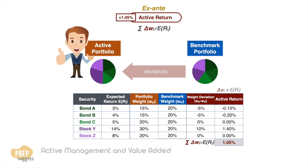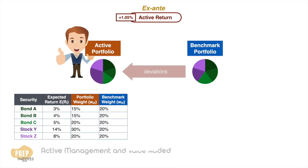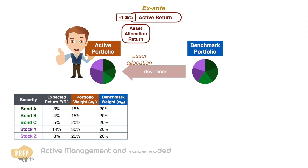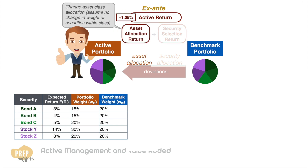The portfolio manager made two types of deviations from the benchmark portfolio: deviations in asset allocation, and deviations in the allocation to securities within each asset class. Active return may be attributed to the sum of asset allocation return and security selection return. Asset allocation return is calculated based on just the deviation in asset class without any change in the weight of securities within each asset class.